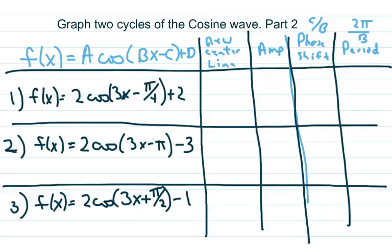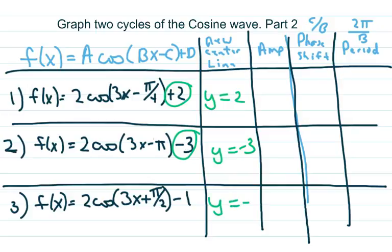Our new center line is y equals 2, y equals negative 3, y equals negative 1. Our amplitude is here. In this case, they're all 2.